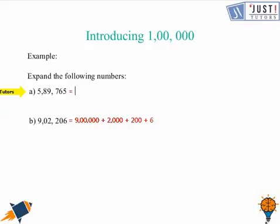Let's do part A. If you have tried, let's verify it. 5 at the lakhs, then 8 at the ten thousands place, so 80,000. Then 9 at the thousands place, so 9000, then 700 plus 60 plus 5. If you've got the same answer, it's really good that you have learned well about expanding large numbers.